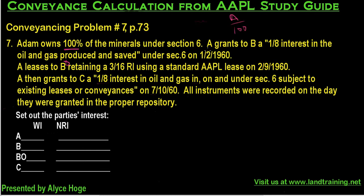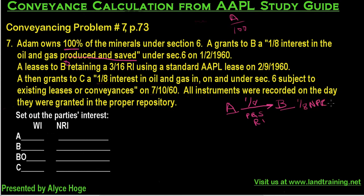Adam grants to B a one-eighth interest 'produced and saved' — that language means 'produced and saved equals a royalty interest.' So out of his 100% mineral interest, A conveys to B a one-eighth non-participating royalty interest. What that means is: if A ever gets an oil and gas lease and that lease gives a royalty payment, A will deduct and pay B one-eighth of that royalty payment.